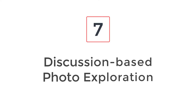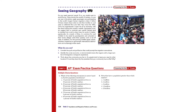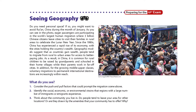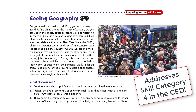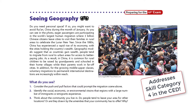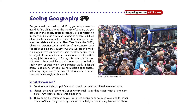Number 7: Discussion-based photo exploration. The Seeing Geography feature offers the basis for engaging class discussion as students analyze the geographical patterns and trends found in photos. This feature addresses skill category 4 in the CED and helps prepare students for stimulus-based questions on the exam.